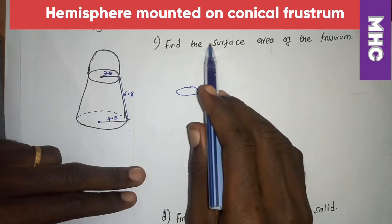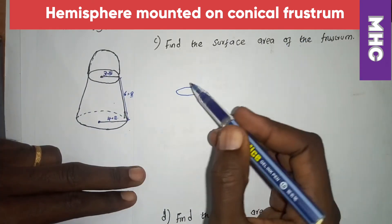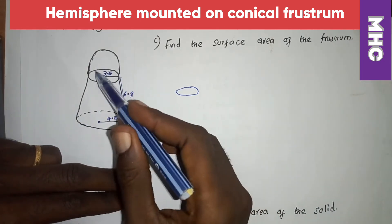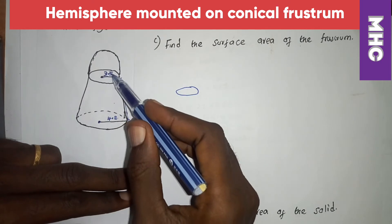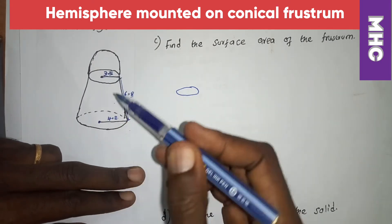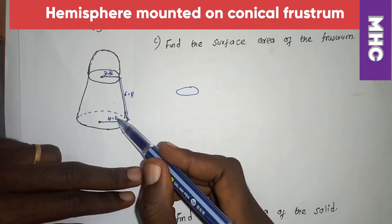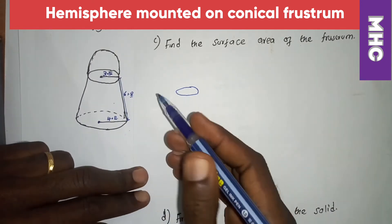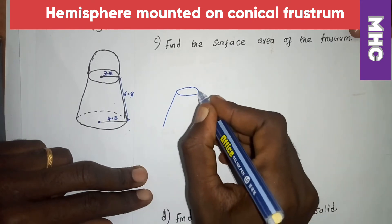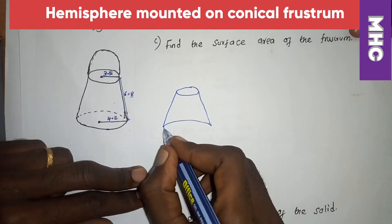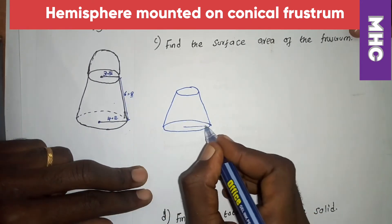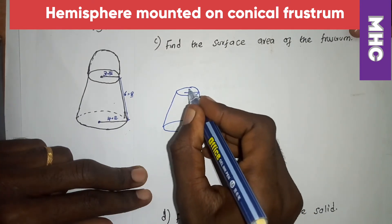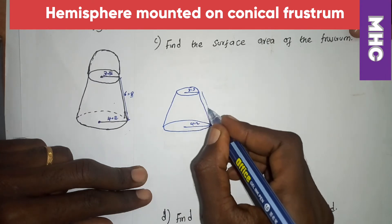Now we find the surface area of the frustum. The frustum has a top circular radius of 3.5 cm and a bottom radius of 4.2 cm. The slant height given is 8 cm. Let us draw the frustum showing these dimensions: bottom radius 4.2 cm, top radius 3.5 cm, slant height 8 cm.